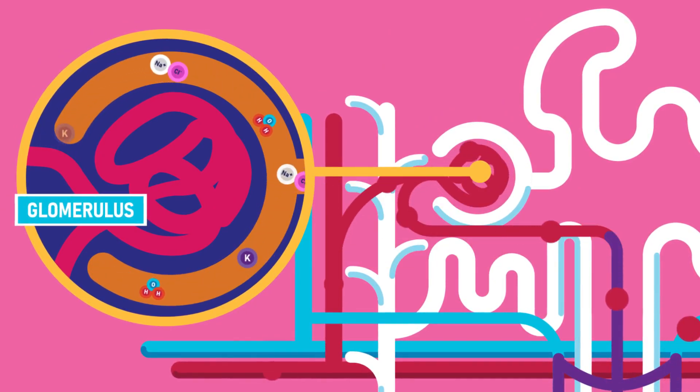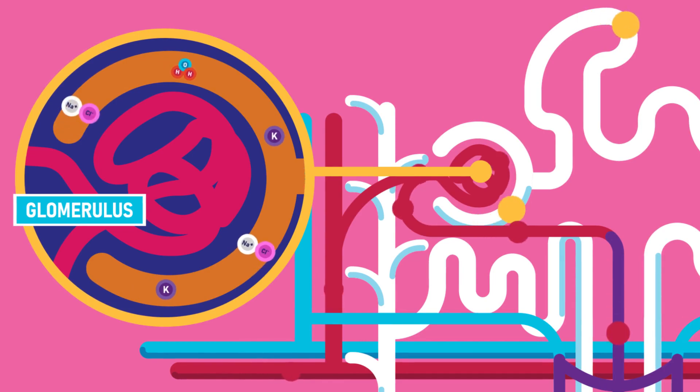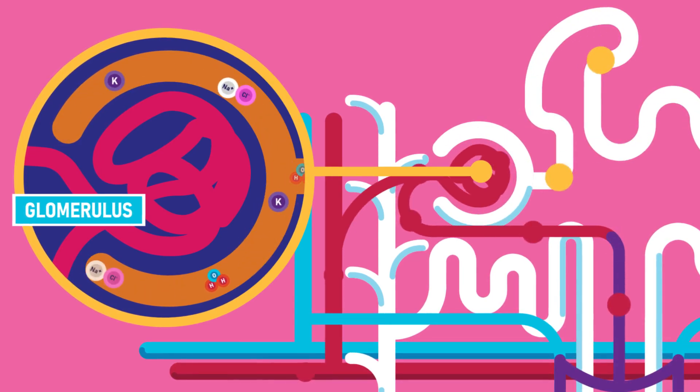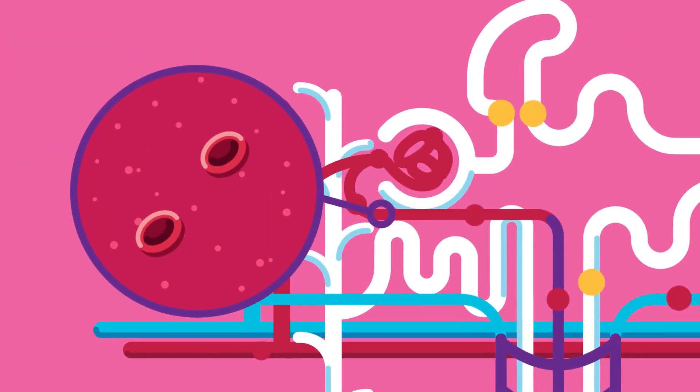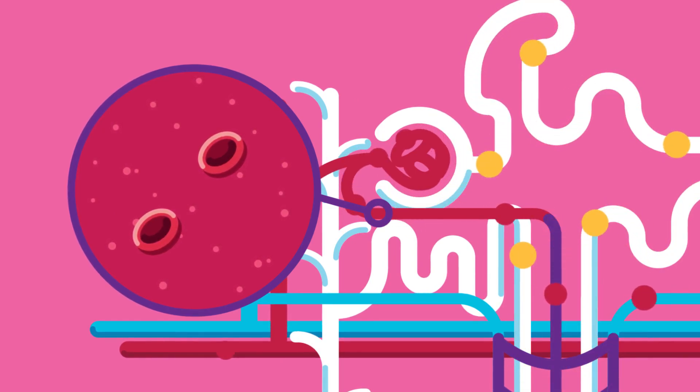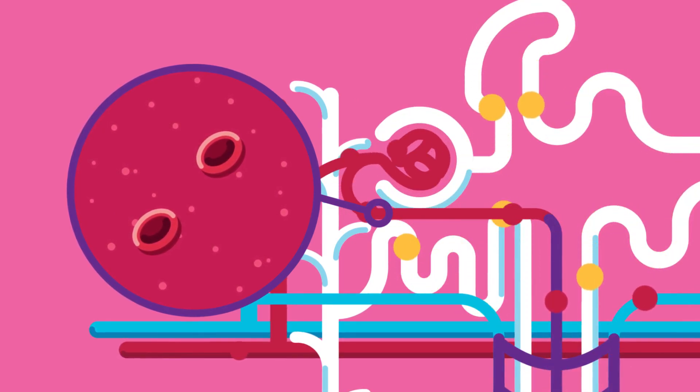The glomerulus is a cluster of capillaries that forces the blood to pass through it in high pressure so that the blood filters out. Only blood cells and proteins remain in the capillary while the filtered substances go to the Bowman's capsule.